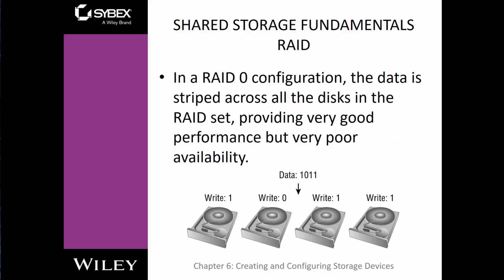RAID 0 spreads data across two or more disks. For example, using two disks, RAID 0 writes half the data to each disk — it provides really good performance, but if one drive dies, you lose everything. If you spread it over four disks, it writes a quarter of all information to each disk, and again, one drive dying means you lose everything.